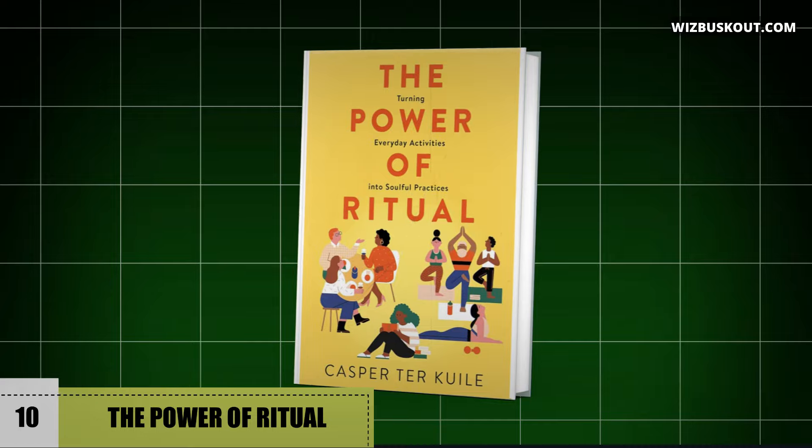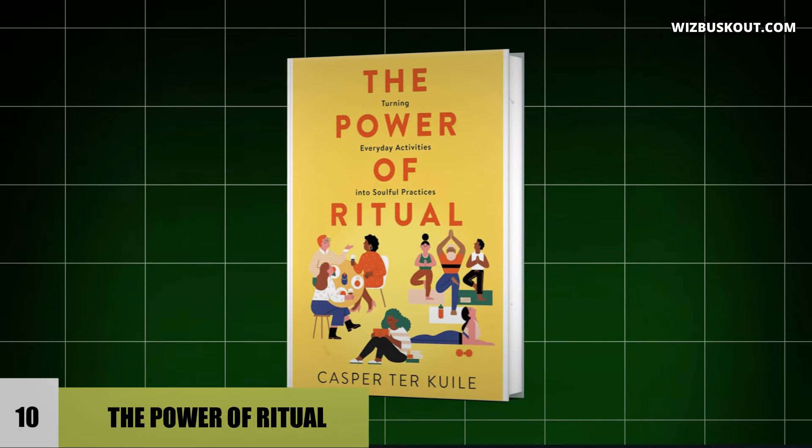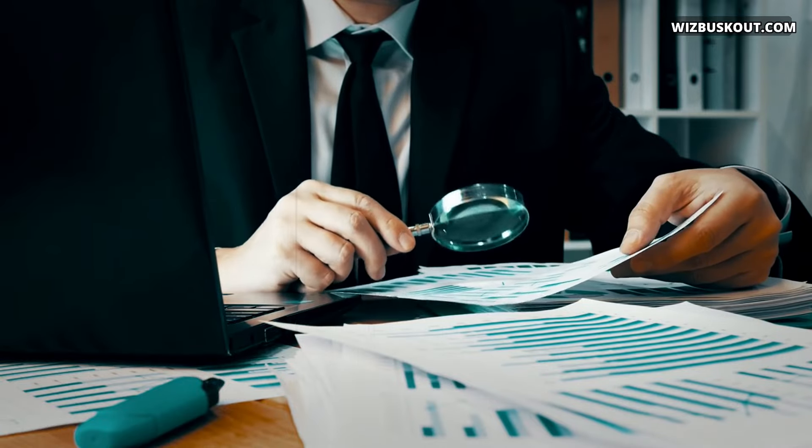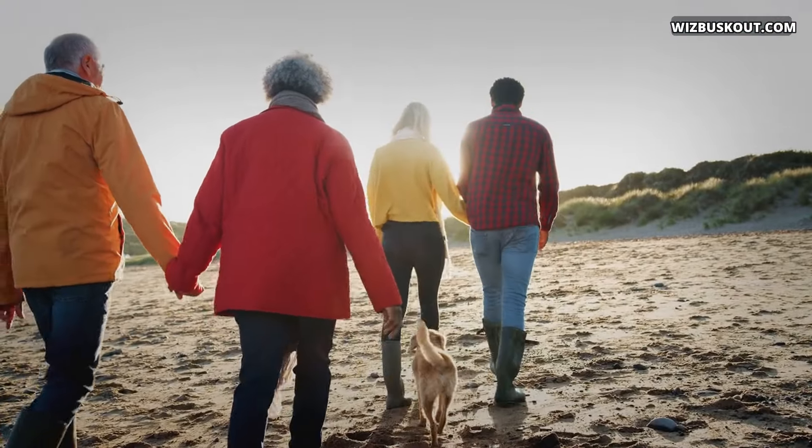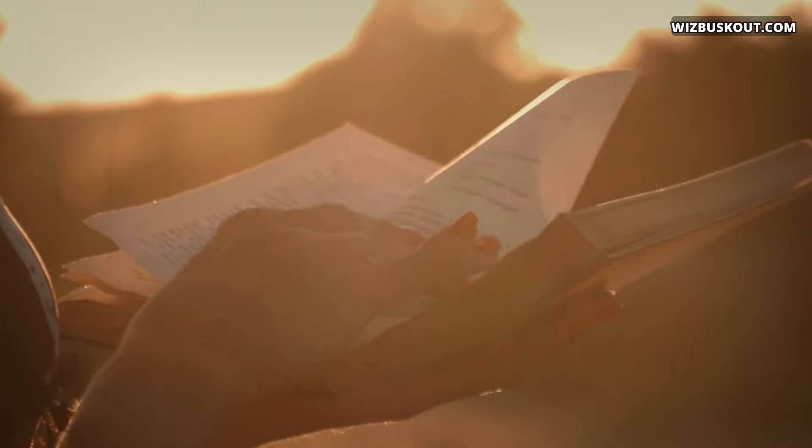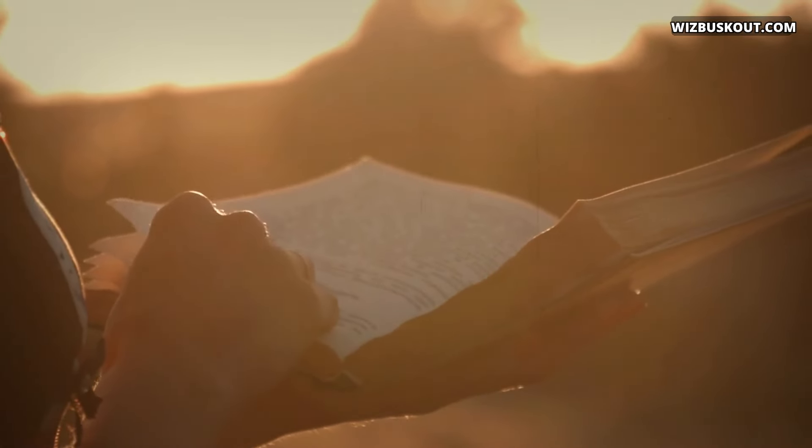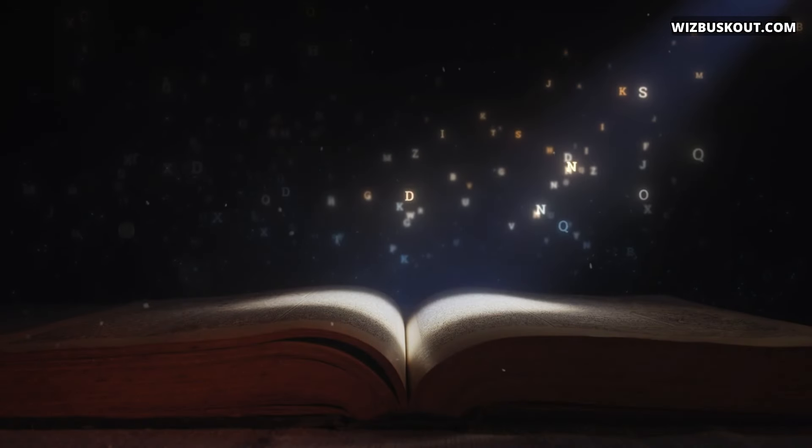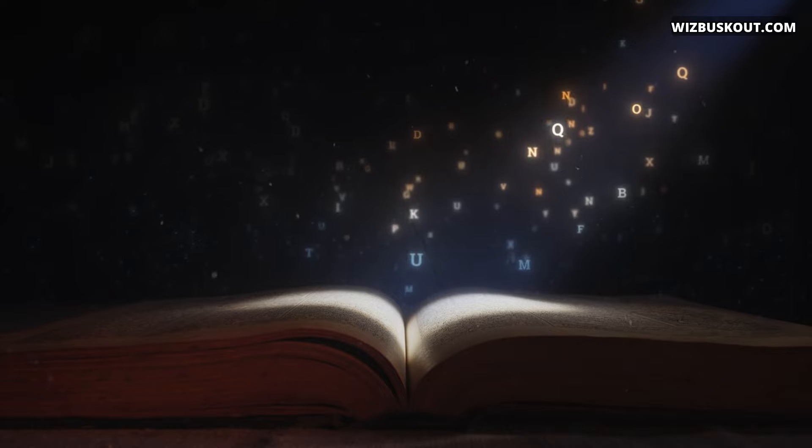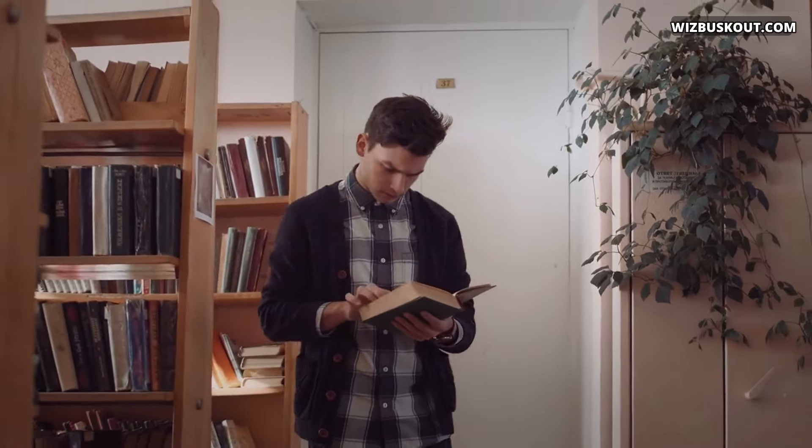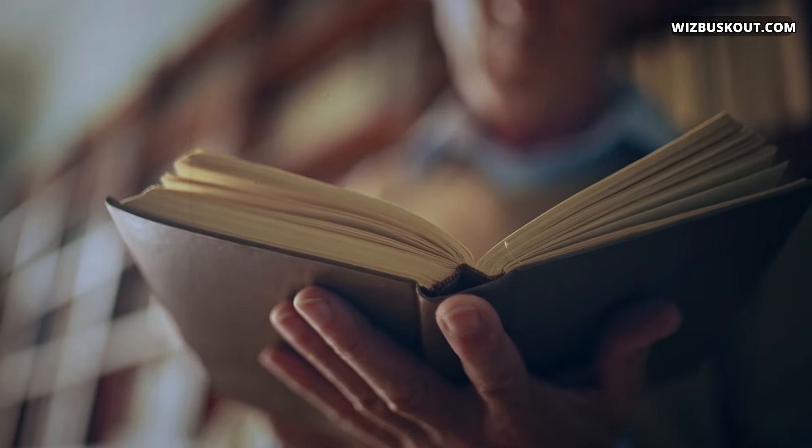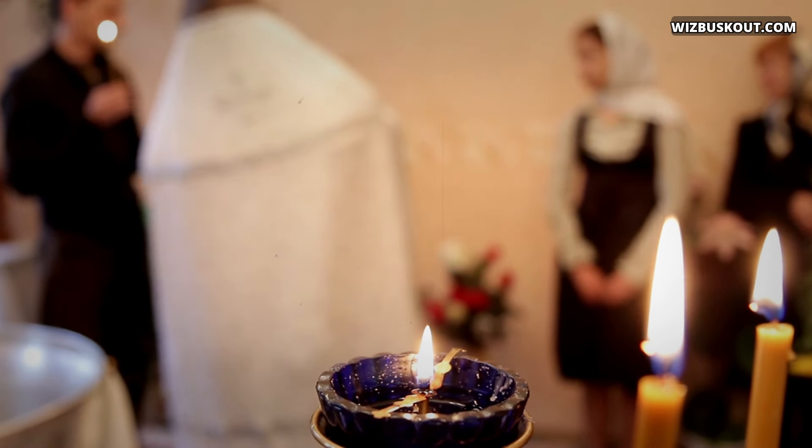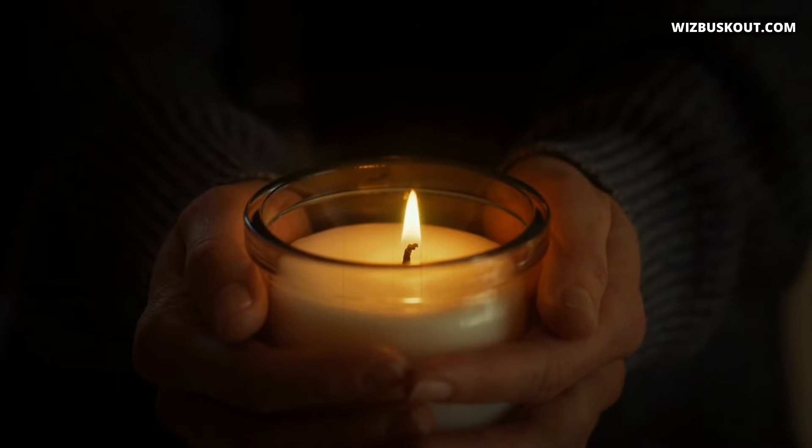Number 10, The Power of Ritual by Caspar Terkayla is a fascinating exploration of how we can transform everyday activities into meaningful, soulful practices. This book is all about finding connection and purpose in our daily lives. Caspar shares ancient tools reimagined for our modern world and stories from people who are already living this way. The book focuses on four levels of connection with yourself, with others, with the natural world, and with something transcendent.